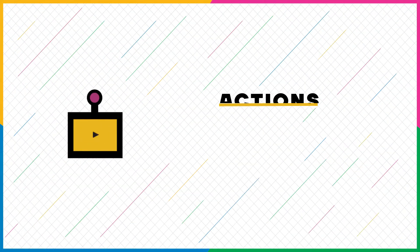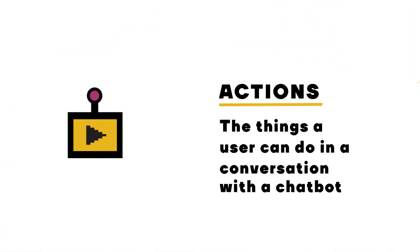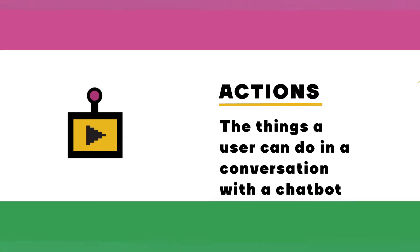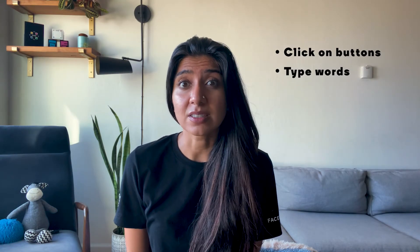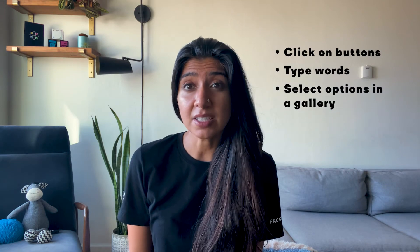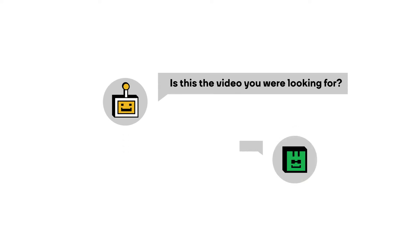Actions are all the possible things that a user can do in a conversation with a chatbot. For example, your user may be able to click on buttons, type words, select options in a gallery, listen to an audio clip, or watch a movie. When designing your chatbot, make sure that you think through all the possible actions your users can take and how your chatbot will respond to them. If your users type something you don't understand, your chatbot should acknowledge this and offer other options that it can understand.